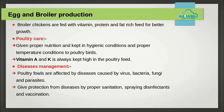Egg and broiler production requires special care for nutrition, shelter, and disease control. Broiler chickens are always fed with vitamins, proteins, and fat-rich feed for better growth. For good production of poultry birds, they are given proper nutrition and kept in hygienic conditions and proper temperature. The food provided should be protein-rich with adequate amounts of fats and high amounts of vitamin A and K.